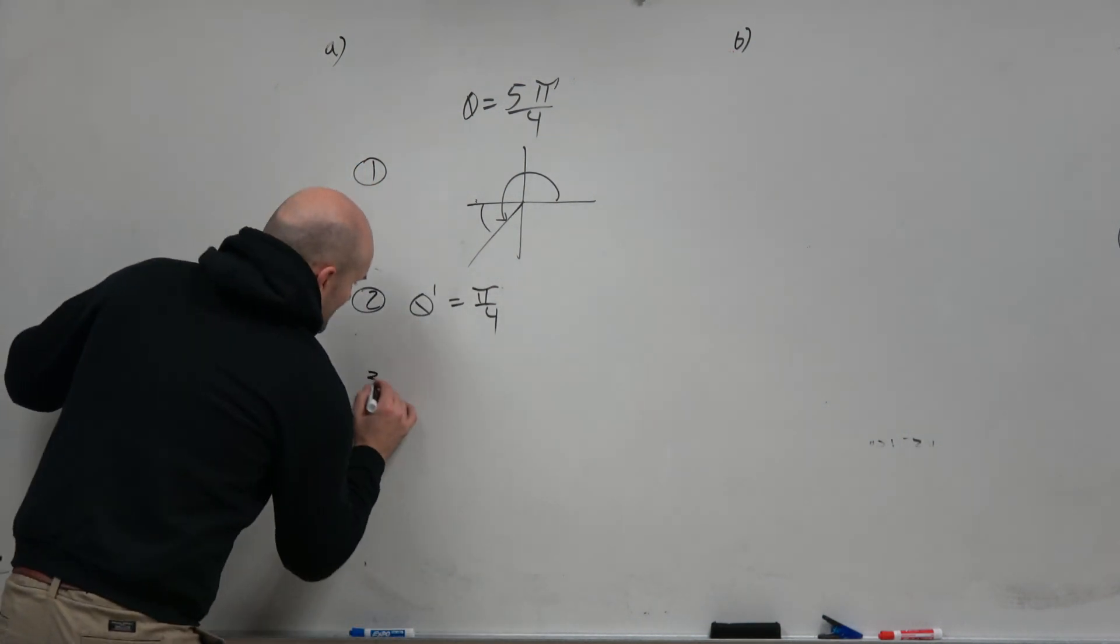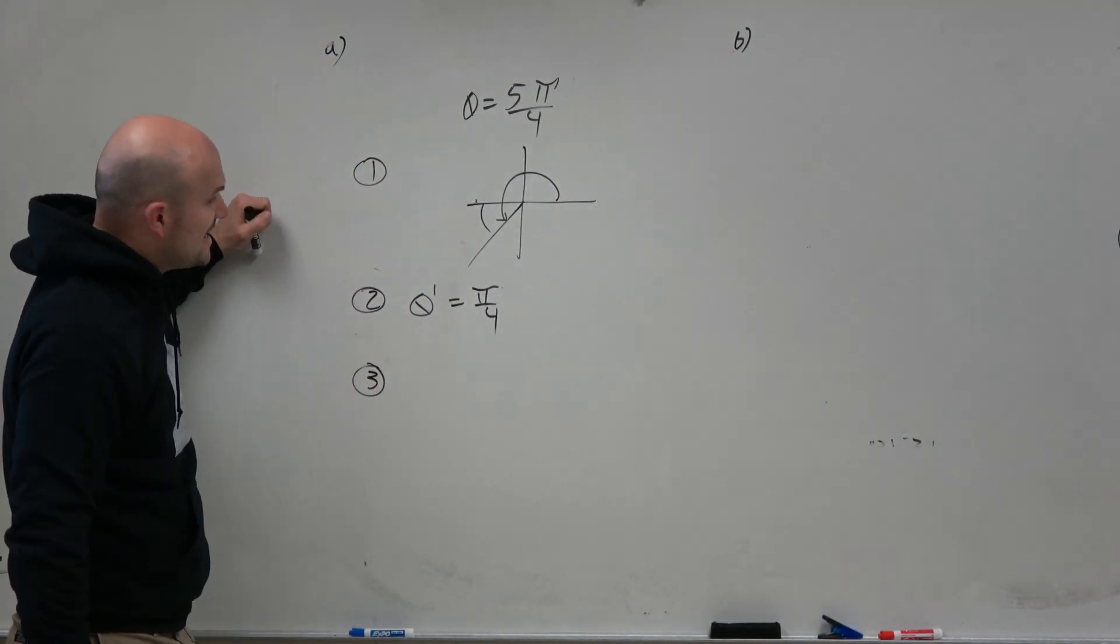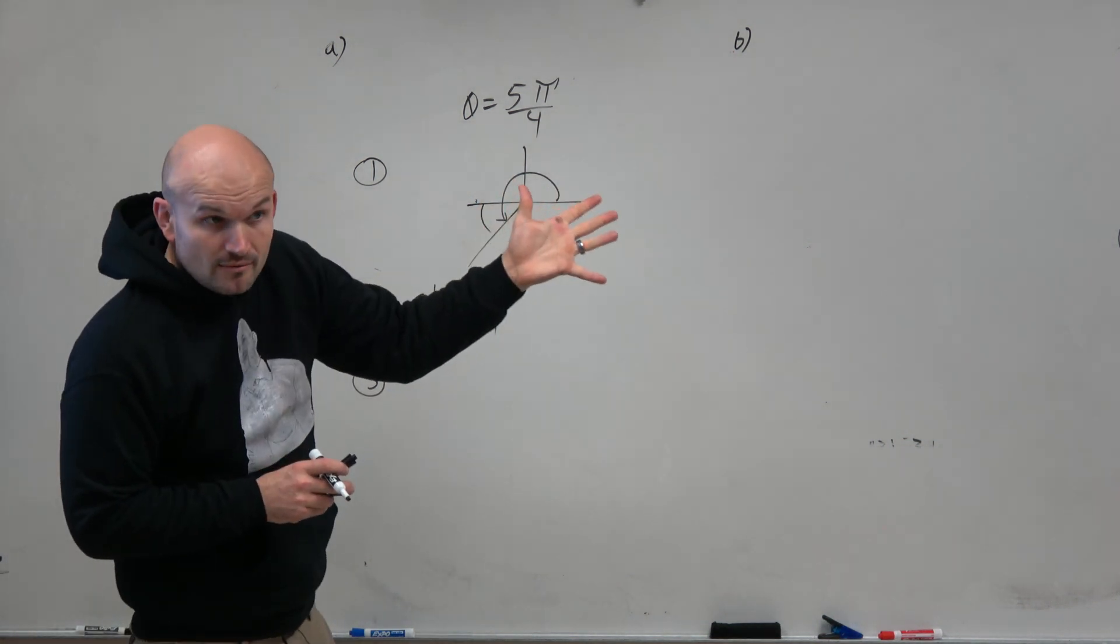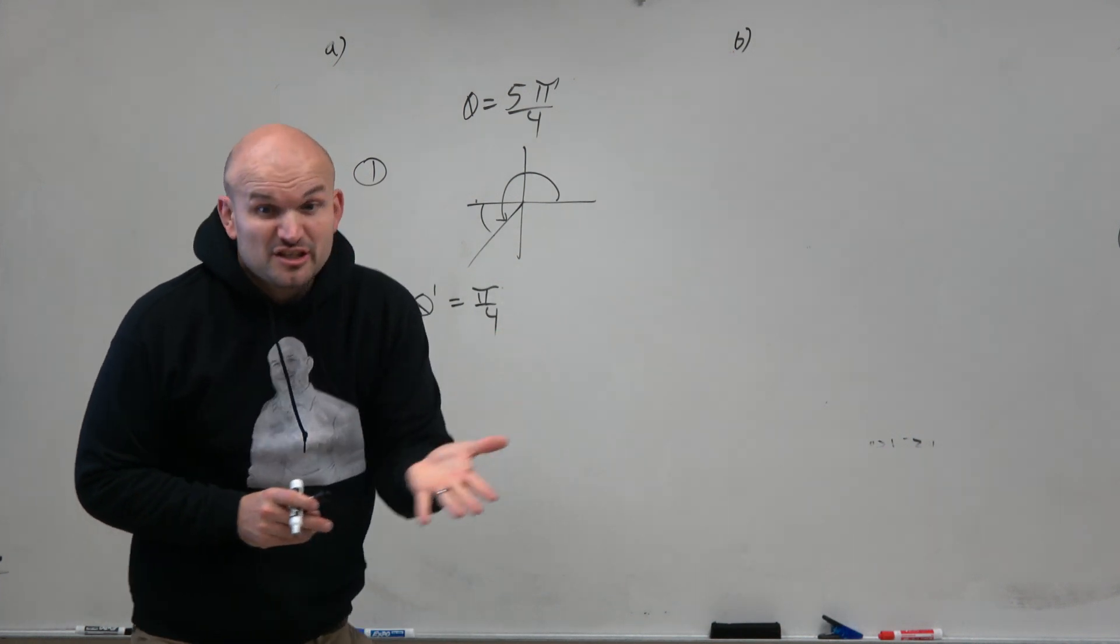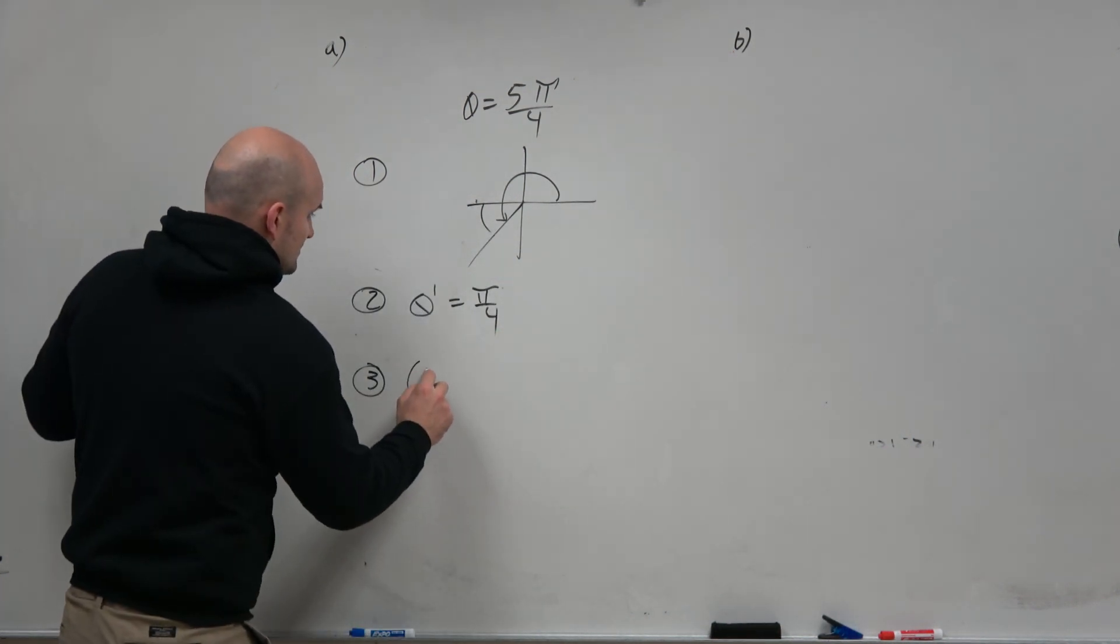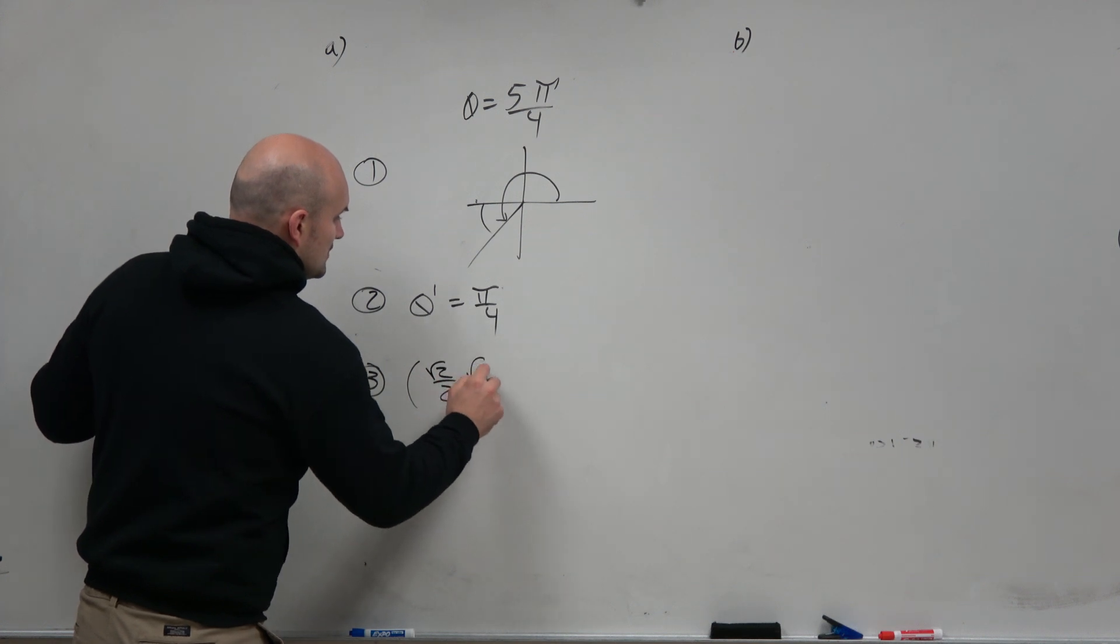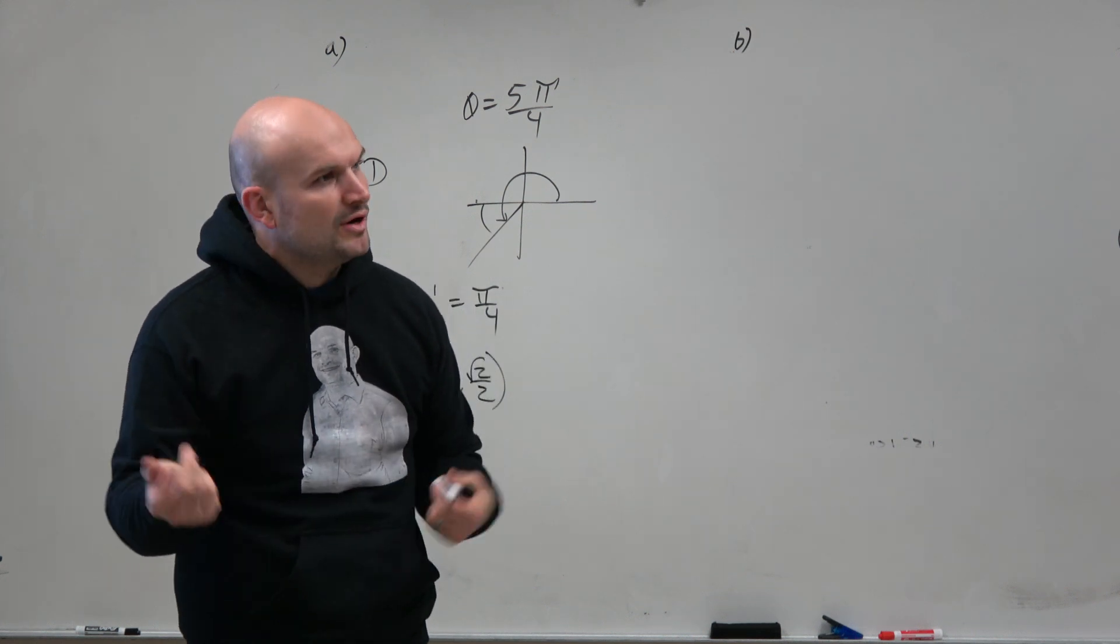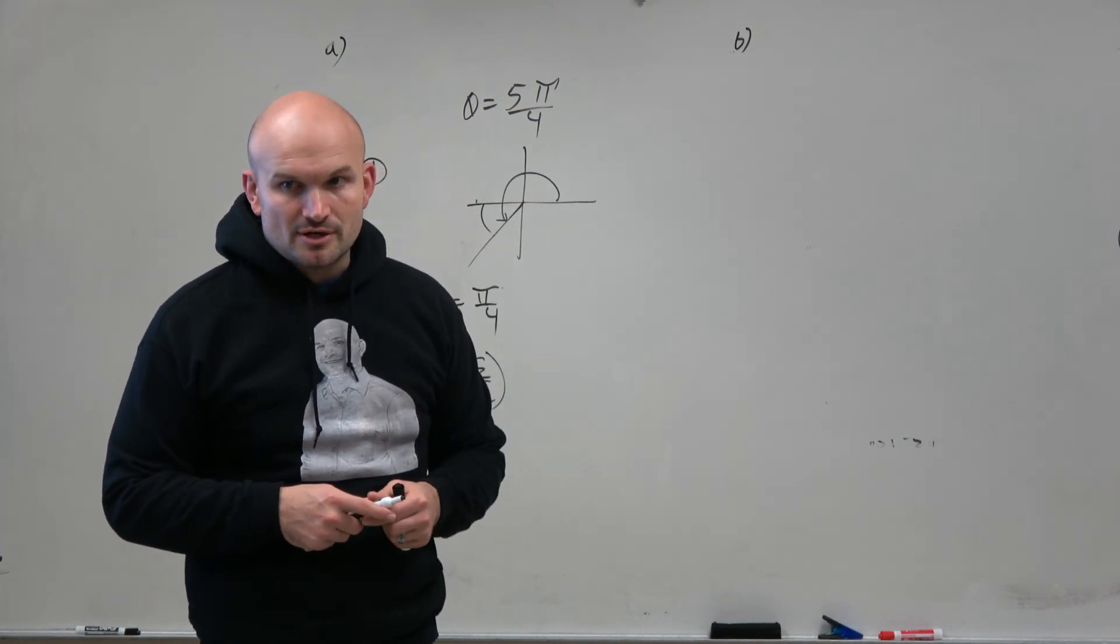Step 3 is finding the point that refers to this reference angle. That's just quadrant 1, right? So π/4, that was actually the first point that we did, which is √2/2. Or, I mean, again, if you're dependent on the unit circle, look at the unit circle. But again, guys, we need to get to the point where we just know that point in the unit circle.